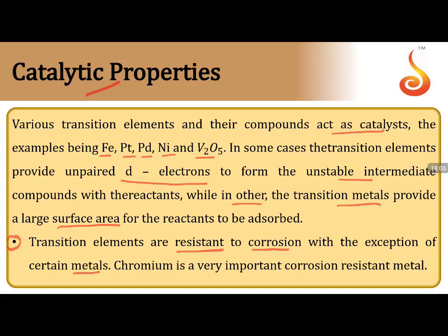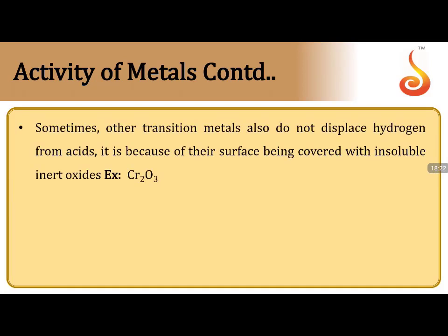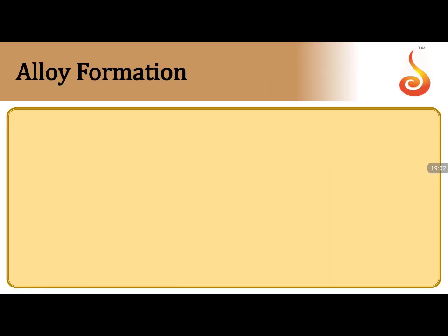There are exceptions to corrosion resistance: iron, copper, and silver undergo corrosion or tarnishing. However, chromium is a very important corrosion-resistant metal. Sometimes transition metals also do not displace hydrogen from acid because their surfaces are covered with insoluble inert oxides. The most common example from an examination perspective is Cr₂O₃, which is very important to remember.